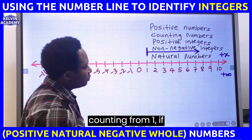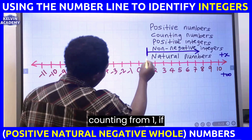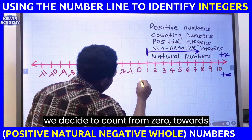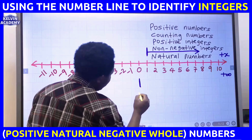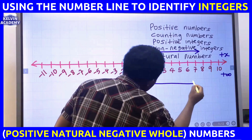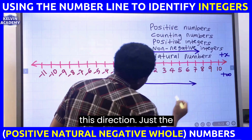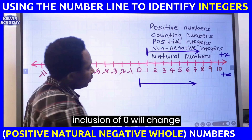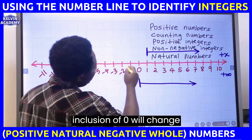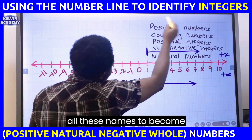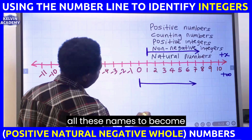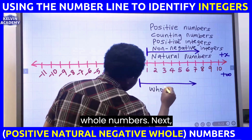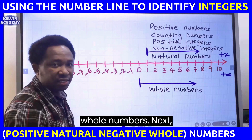Instead of counting from 1, if we decide to count from 0 towards this direction, just the inclusion of 0, we change all these names to become whole numbers.